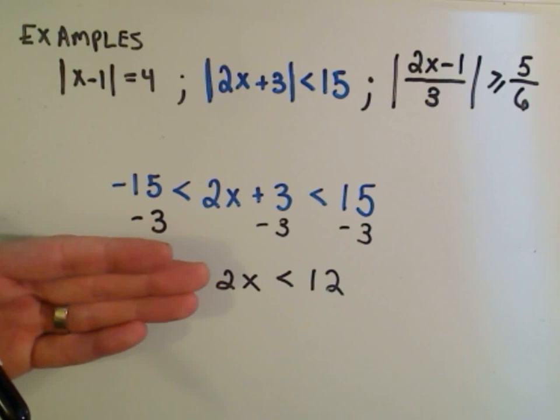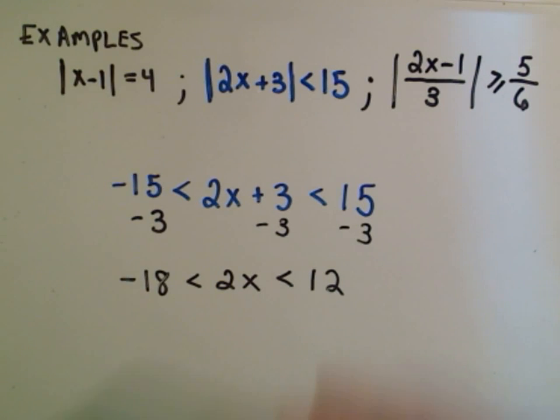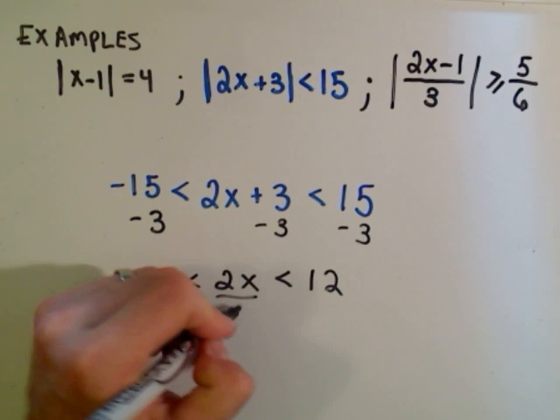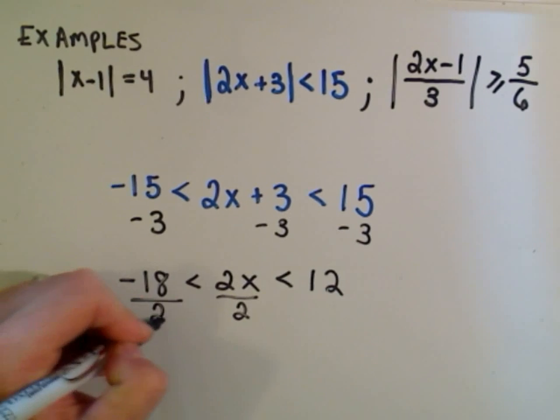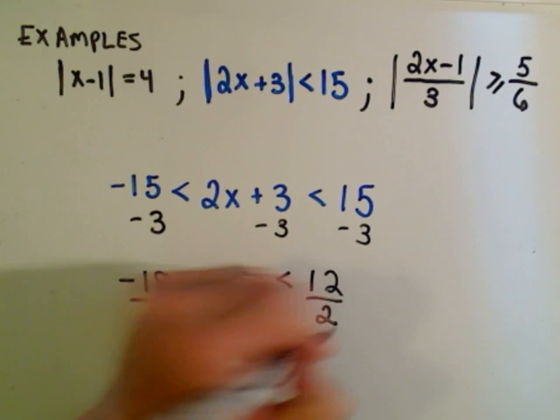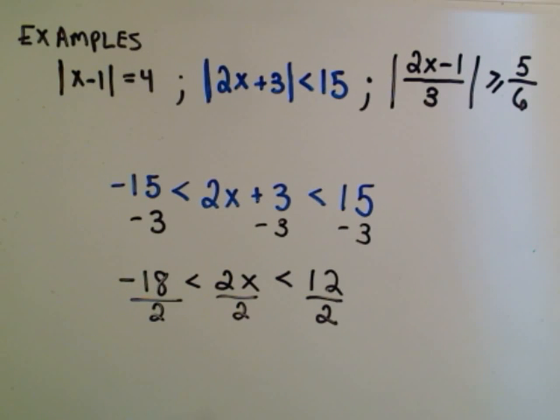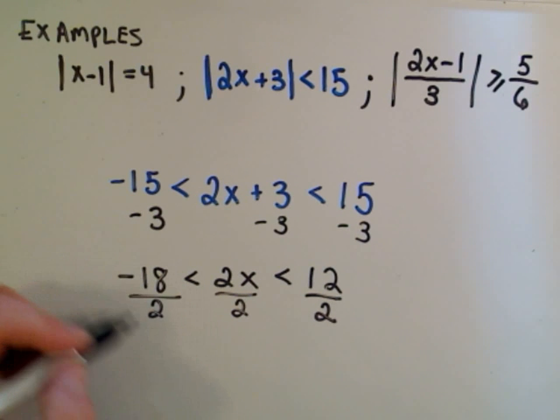Same idea, if I wanted to get the x by itself, I would divide by 2 on both sides. So I'm going to divide by 2 everywhere. Remember with inequalities, if you multiply or divide by a negative number, your inequalities flip. We don't have that case here, but just a little refresher.